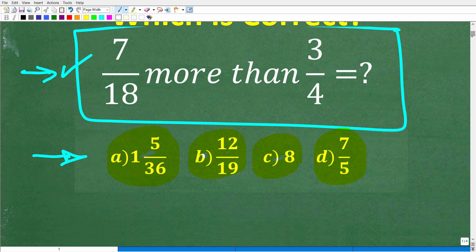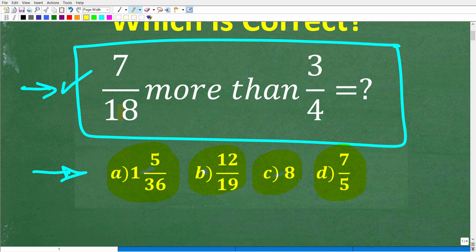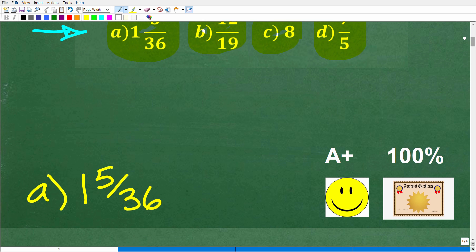Alright, so one more time, we have this problem. And we want to know 7/18 more than 3/4 is how much. And we're not going to use our calculator. Alright, so let's take a look at the answer. The correct answer is A, 1 and 5 over 36, or 5/36. So it's a mixed number fraction.